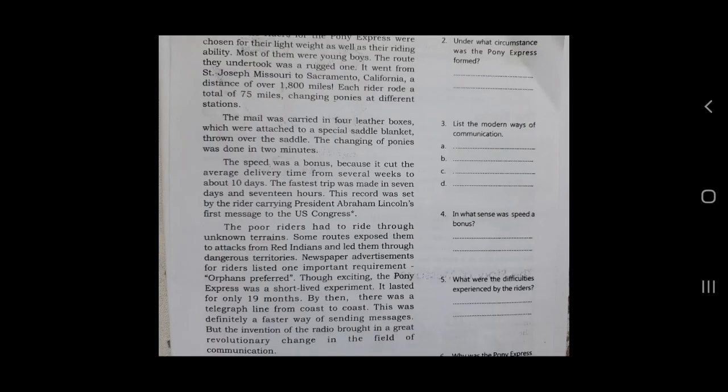Page 81. The riders for the Pony Express were chosen for their lightweight as well as their riding ability. Most of them were young boys. The route they undertook was a rugged one — it went from St. Joseph, Missouri to Sacramento, California, a distance of over 1,800 miles. Each rider rode a total of 75 miles, changing ponies at different stations. The mail was carried in four leather boxes attached to a special saddle blanket thrown over the saddle. The changing of ponies was done in two minutes.